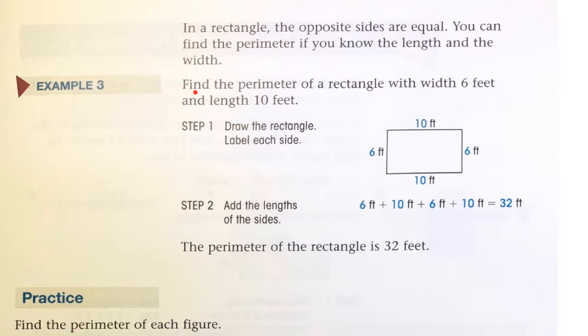For Example 3, find the perimeter of a rectangle whose width is 6 feet and length is 10 feet. We're only given the measurements for the width and the length. So if this is 6 and this is 10, then this is also 6 and the top is also 10. That's what they did for the picture.